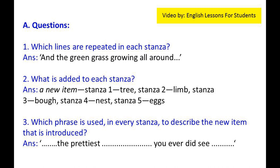Question A: Which lines are repeated in each stanza? The last two lines, 'and the green grass growing all around,' are repeated. The stanzas introduce new items: stanza 1 - tree, stanza 2 - limb, stanza 3 - nest, stanza 4 - eggs. Which phrase is used in every stanza to describe the new item introduced? Answer: 'The prettiest you ever did see.'